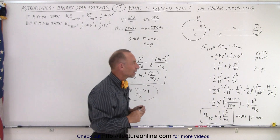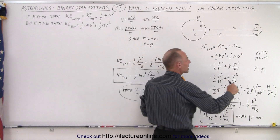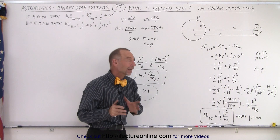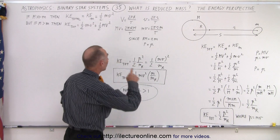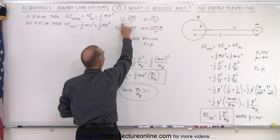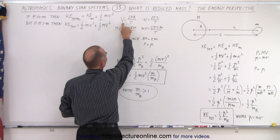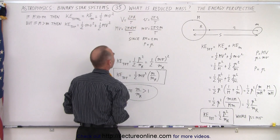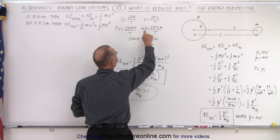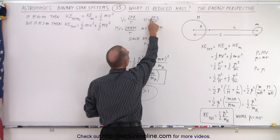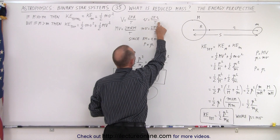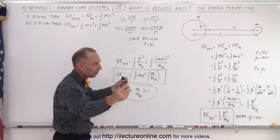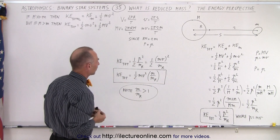Then we make the claim that the large P must equal the small p. That may not be directly evident, but notice that the velocity of the large mass is 2πR/T and the velocity of the small mass is 2πr/T. The period T must be the same for both because they're always on opposite ends of the barycenter.